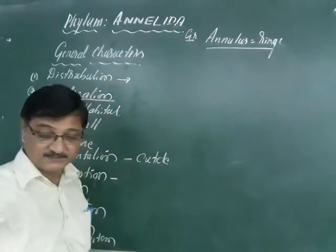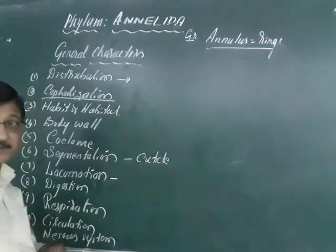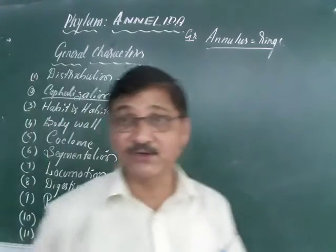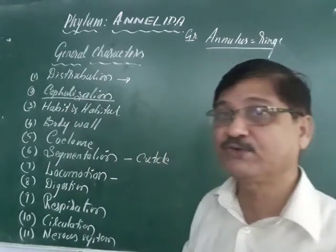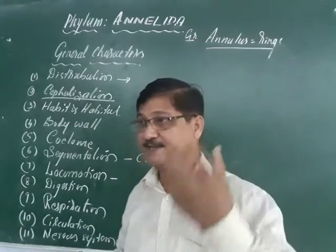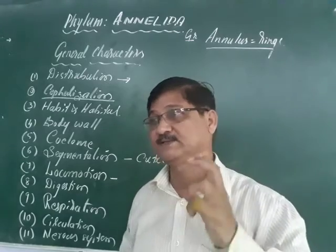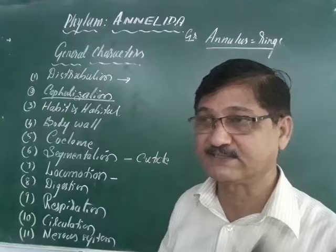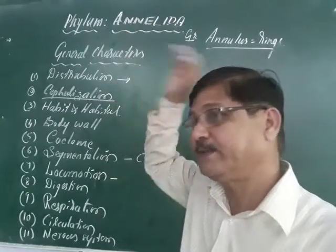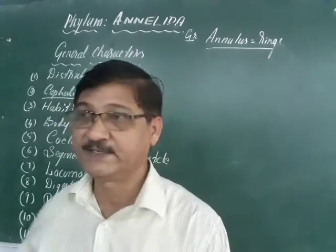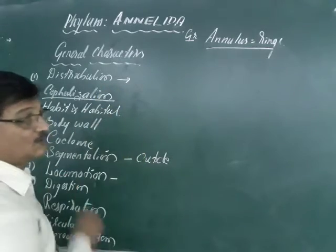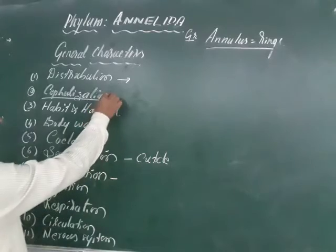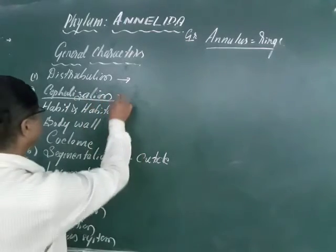Head characters include eyes, nose, ears, and the brain — maximum you can say the brain with some other sense organs at the anterior part of the body; that is called the head. Head is also termed cephalo. Cephalo means nothing but the head. So, the initiation of the formation of the head is called cephalization.